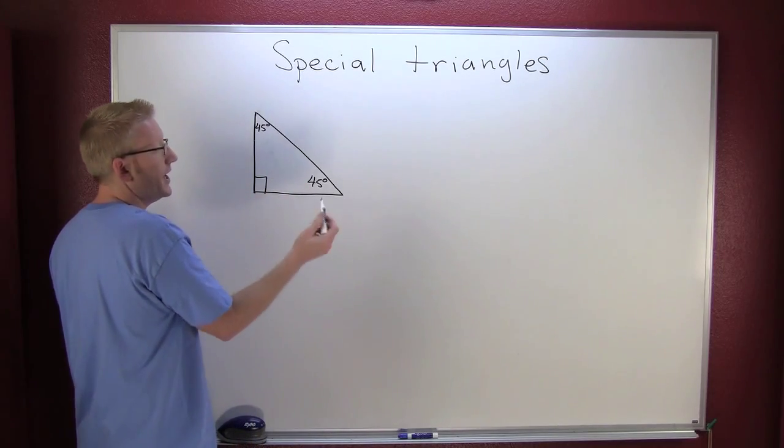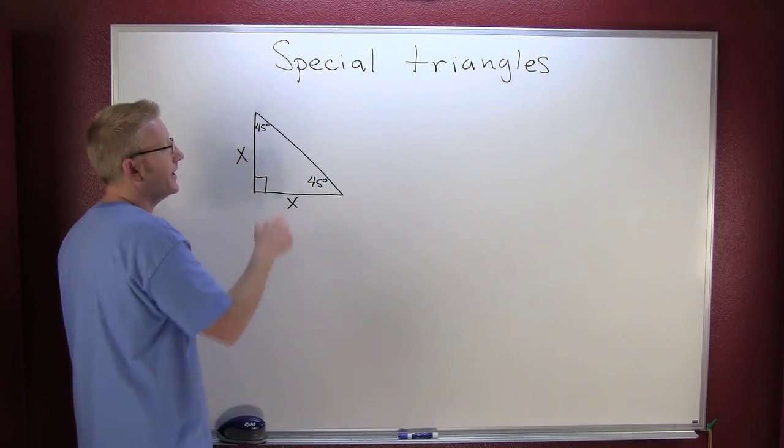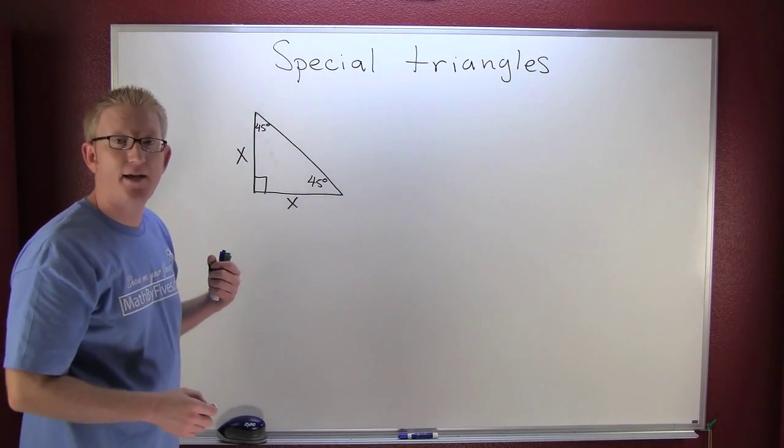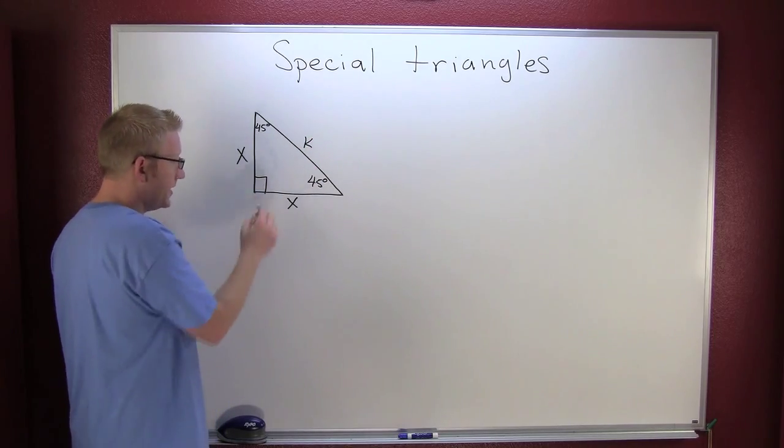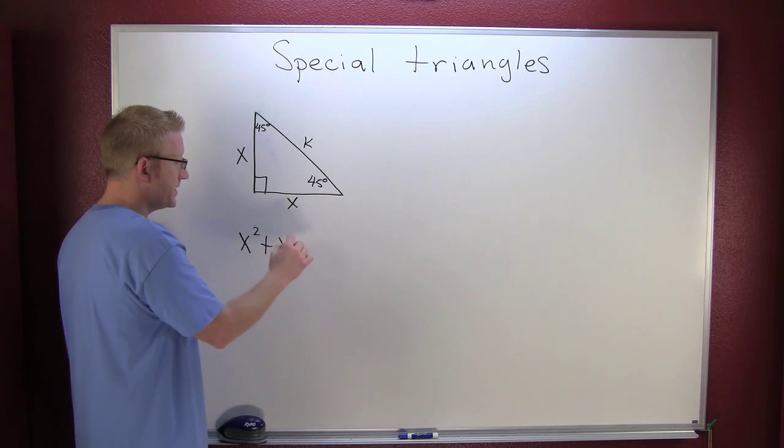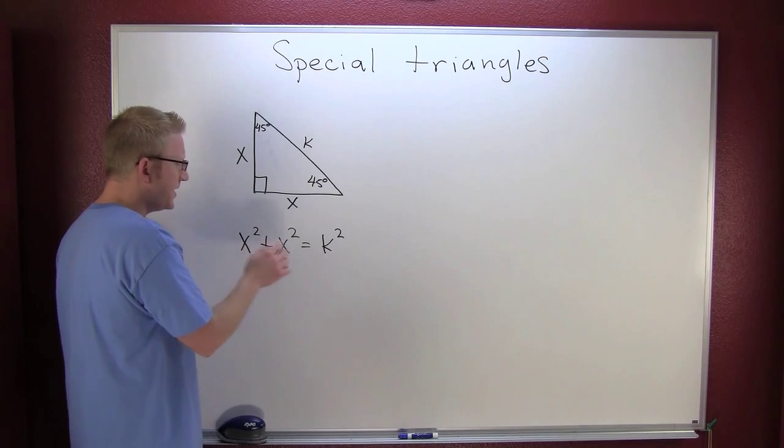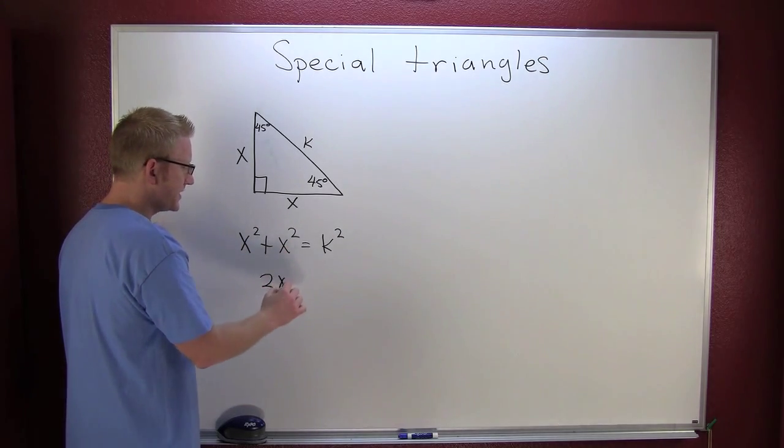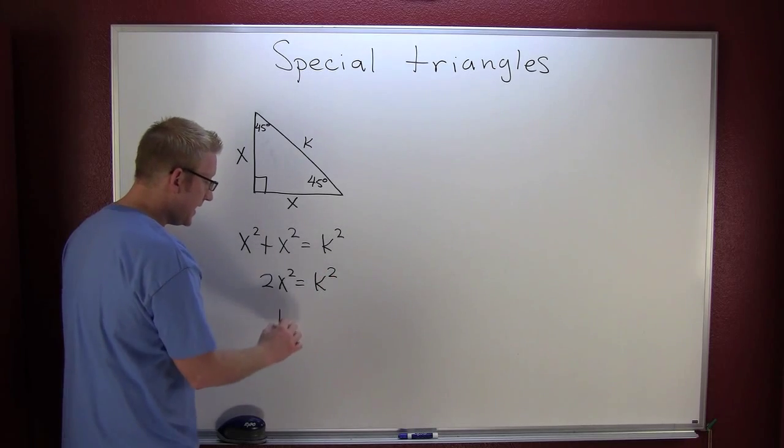So the legs are the same. I don't know what they're going to be, let's call them x. If I want to find the length of that other side, why don't we call it k. So then I use my Pythagorean theorem and I have x squared plus x squared equals k squared. Not one of them but two x squared is k squared.